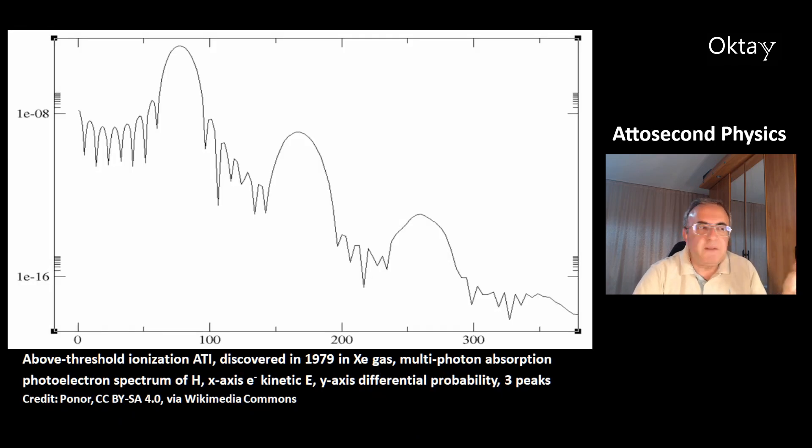This is above threshold ionization, ATI. This was discovered in 1979 in xenon gas. This is a multi-photon absorption. This is a photoelectron spectrum of hydrogen. X-axis is electrokinetic energy. Y-axis is differential probability. And you can see there are 3 peaks.